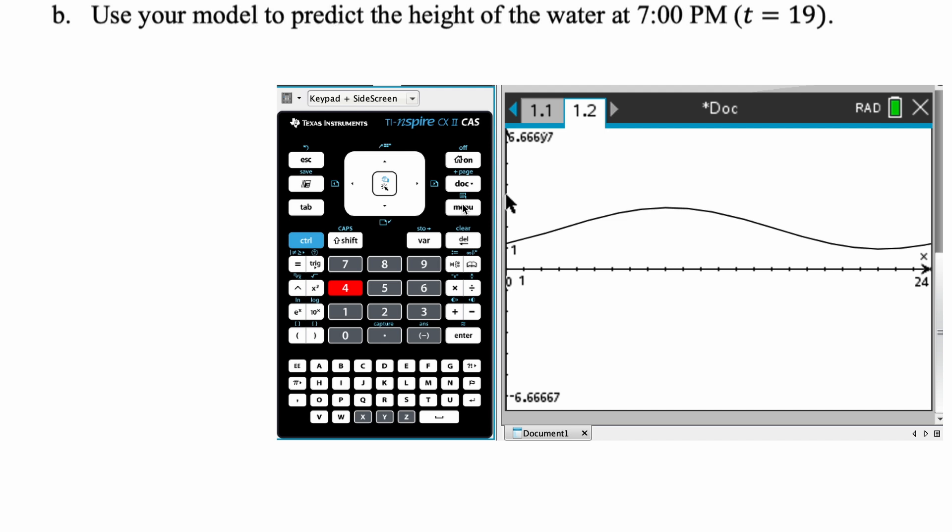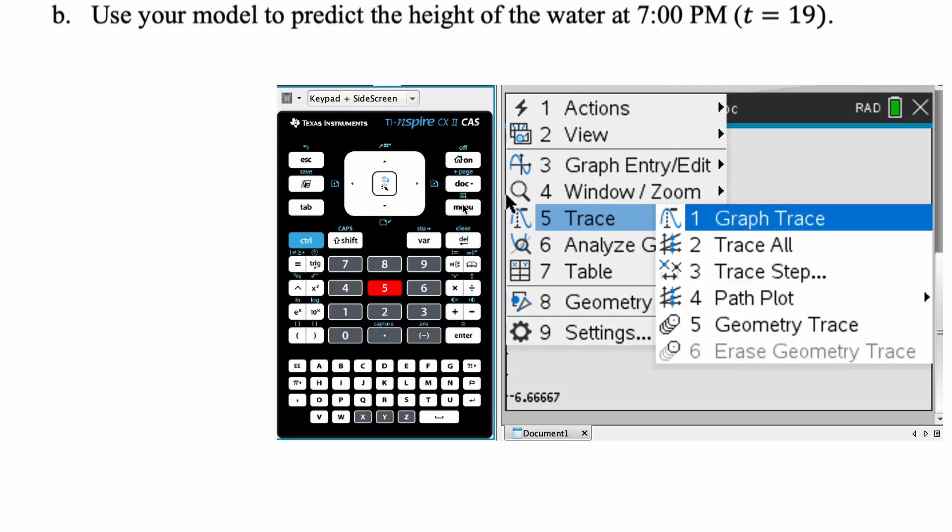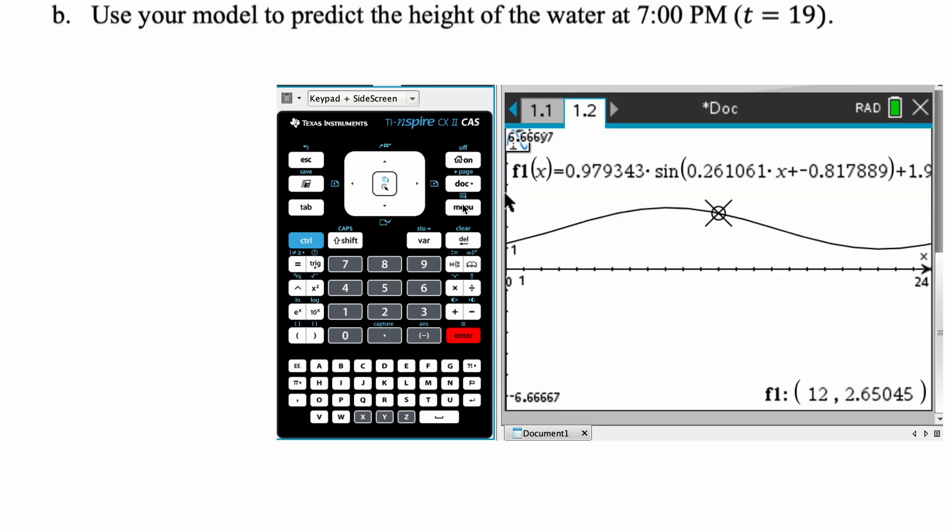What we need to do is use this to predict the height of the water at T equals 19. I'm going to do that by using trace. So that's menu, and option five, graph trace. And now you can literally just type in the number that you want. So I'm going to type 19 for 19, and we get this. So at 19, the height of the water is 1.1055 meters. So I'm going to write that in.